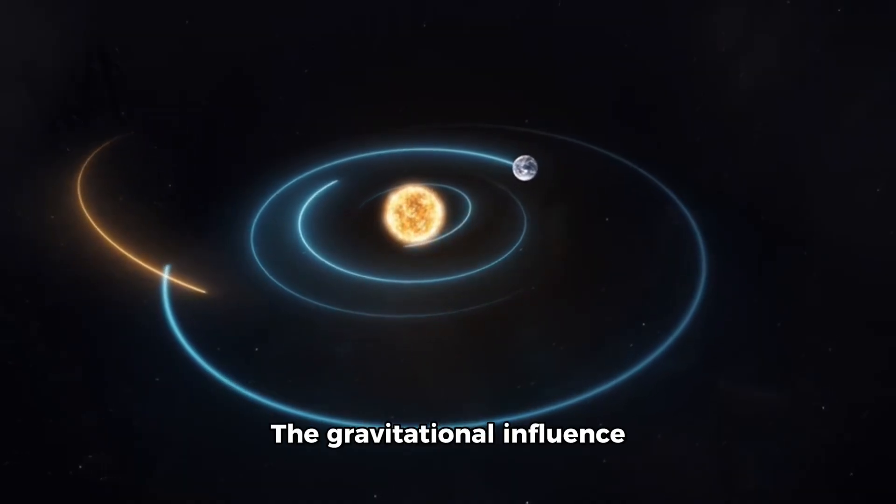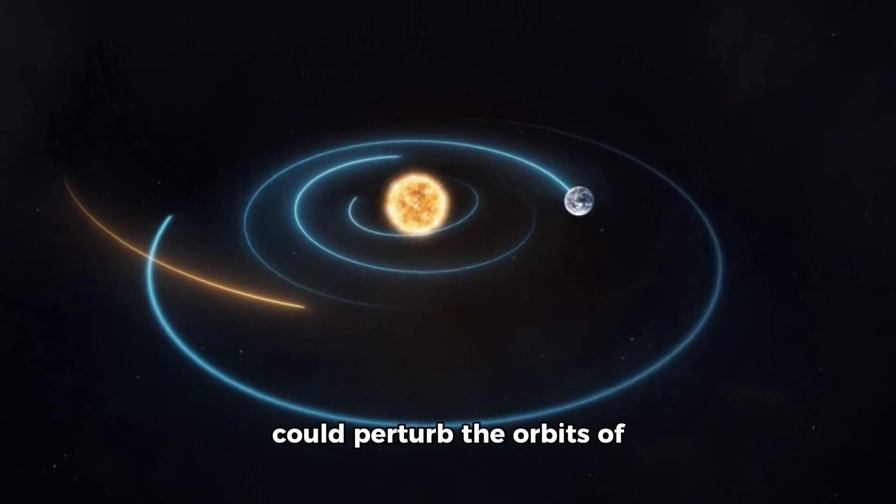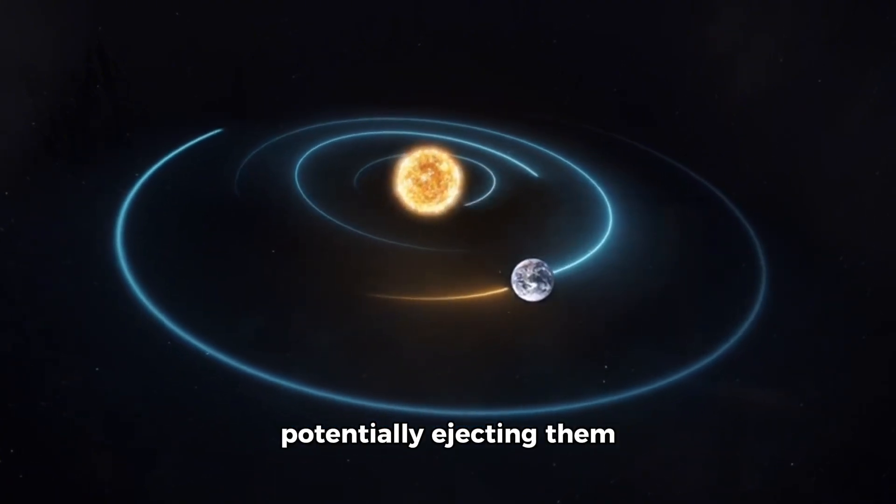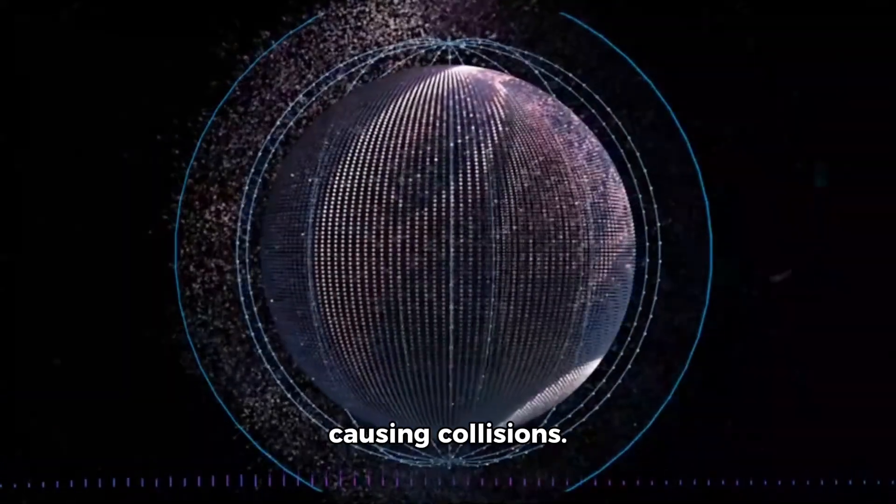Orbital disruption. The gravitational influence could perturb the orbits of Earth and other planets, potentially ejecting them from their current orbits or causing collisions.